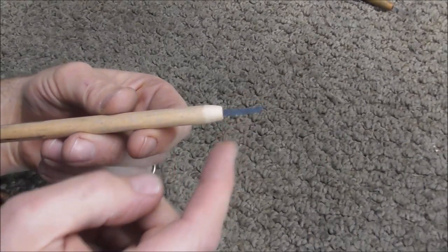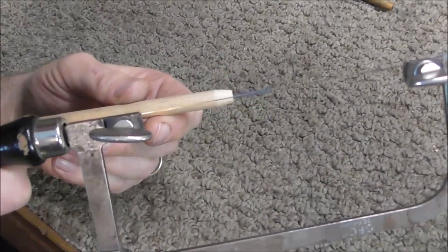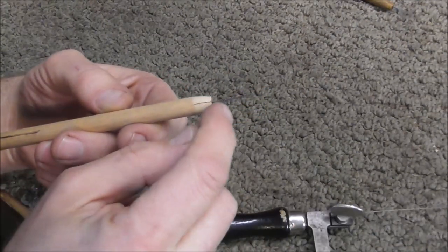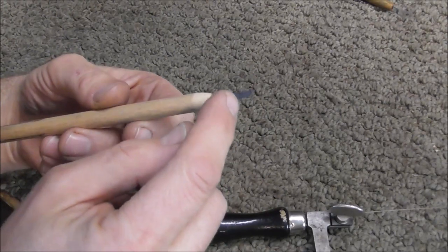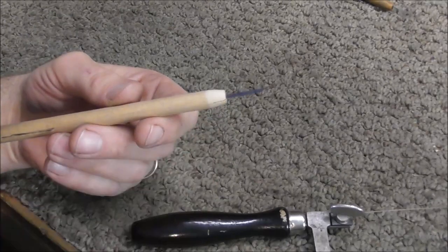And these do not last forever so when it does go bad you can take your saw and cut the same notch in there, just cut right through the glue and the cassette tape and then you can put another one in there and glue it in the same way.